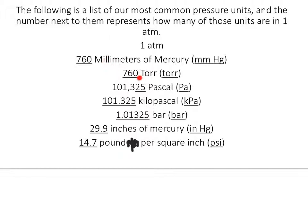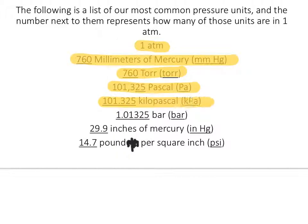Do note that 760 is the same number for mmHg, Torr, and one related unit — the decimal just moves places. 29.9 is kind of random, and you won't use it a lot. And 14.7 is kind of random, but you won't use it a lot either. The main ones you need to know are ATM, millimeters of mercury, Torr, Pascal, and kilopascal. The other three are great — they'll probably show up in like one homework problem — but most of the time, just those top five.